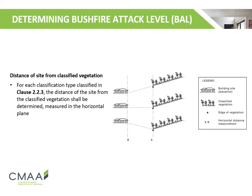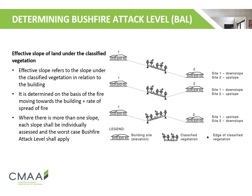The distance of the building shall be measured from the edge of the site to the edge of the classified vegetation in the horizontal plane, accounting for any slopes present. The distance is represented in the adjacent diagram from point B to point A. The effective slope of the land under the classified vegetation shall also be taken into account. Effective slope refers to the slope under the classified vegetation in relation to the building, determined on the basis of the fire moving towards the building and the rate of spread of fire. If there is more than one slope, each slope shall be individually assessed and the worst case bushfire attack level shall apply.